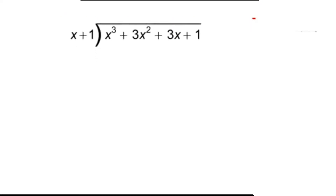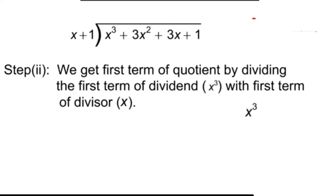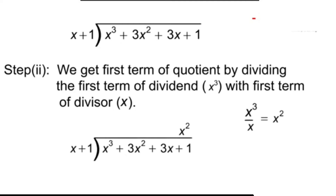These are the dividend and divisor. Children, now what is the quotient? We need to follow Step 2. We get the first term of the quotient by dividing the first term of the dividend, that is x cubed, with the first term of the divisor. To get the first term of the quotient, we need to always divide the first term of the dividend with the first term of the divisor. Let us divide x cubed by x. By simplifying, we get x squared. Therefore, the first quotient is x squared.